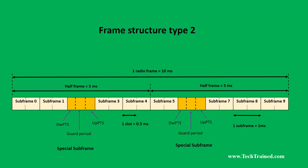When you look at Frame Structure Type 2, or the TDD radio frame, it still consists of 10 milliseconds in duration. However, the important difference here is that since there is just one unpaired spectrum — one RF carrier carrying both uplink and downlink information — all subframes share that carrier. At subframe number 2 and subframe number 6, there are switching subframes where the transmission switches either from downlink to uplink or uplink to downlink. This special subframe is one of the key differences between a TDD and FDD radio frame.